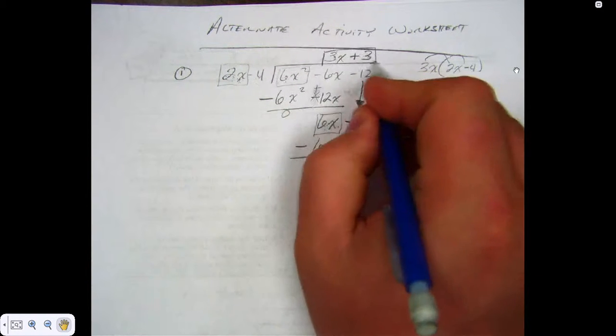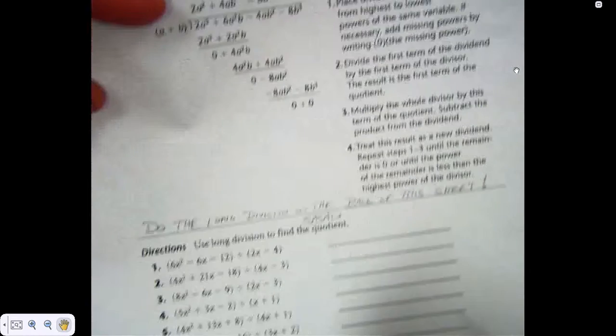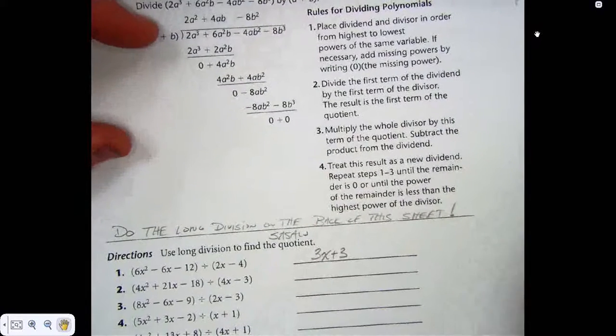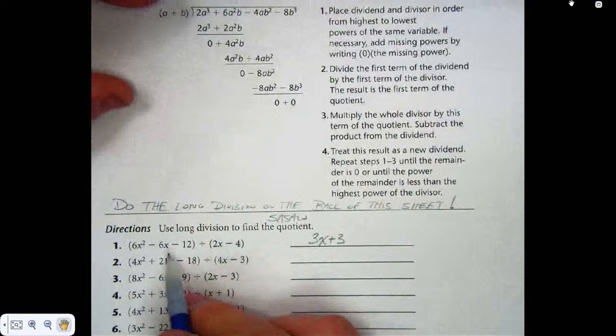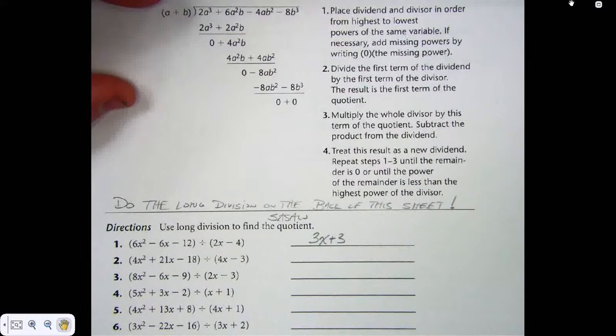So when I go back to my worksheet, what am I going to put as the answer for number 1? 3x plus 3. That's your answer. That's what that divided by that is, 3x plus 3.